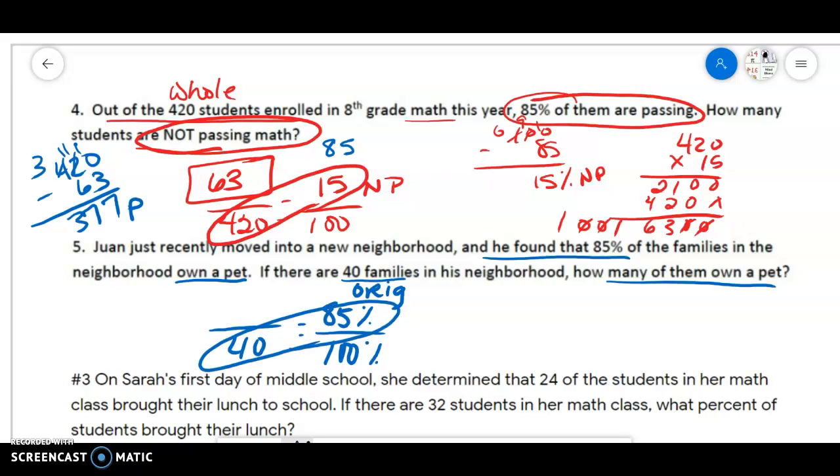So again, we're going to cross multiply, divide. 40 times 85 is 3,400. And when we divide that by 100, we can take off our zeros. We can see that 34 families have a pet.